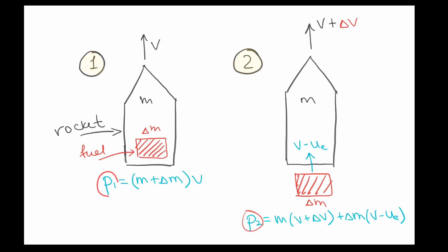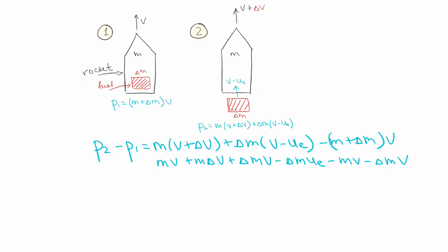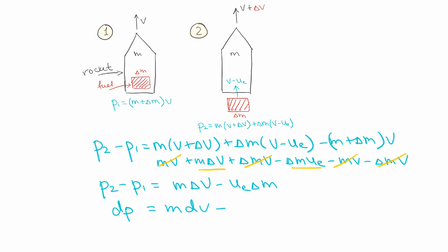To find the change of momentum per Newton's second law, we subtract p1 from p2. We get m(v + delta-v) plus delta-m(v - u_e) minus (m + delta-m)v. Opening the brackets and canceling terms that sum to zero, we're left with two terms: m·delta-v and minus u_e·delta-m. Since the propellant mass changes little by little every second, we replace the finite differences with infinitesimals: dp, dv, and dm.